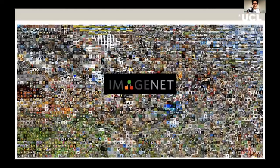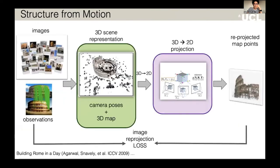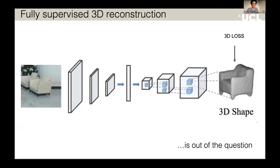The trouble is that when we look at large computer vision datasets collected over the years for image recognition and detection, they only have 2D annotations — class labels, masks, and key points — which are relatively easy and cheap to annotate. But if we actually want to align images with accurate 3D shapes or meshes, this is extremely hard and expensive. Although important efforts like ScanNet and Matterport have collected 3D datasets, they're mostly limited to indoor scenes. So a fully supervised approach based on 3D losses is completely out of the question.